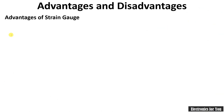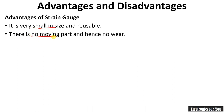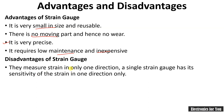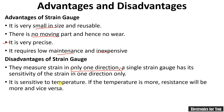Now let's see the advantages and disadvantages of a strain gauge. Advantages: the strain gauge is very small and reusable; it has no moving parts and therefore no wear; it is very precise, low maintenance, and inexpensive. Disadvantages: it measures strain only in one direction; it is sensitive to temperature because a change in temperature causes a change in resistance of the wire; and it is non-linear over a longer range.